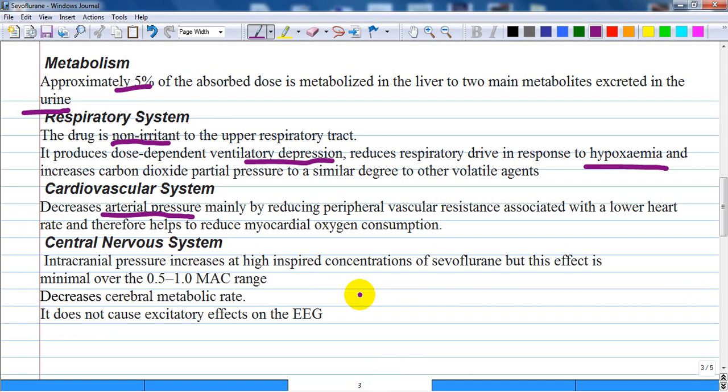On the central nervous system: intracranial pressure increases at higher inspired concentration of sevoflurane but this effect is minimal over the 0.5 to 1 MAC range. It decreases cerebral vascular resistance, cerebral metabolic rate, and requirements of oxygen. It does not cause any excitatory effects on the electroencephalogram.